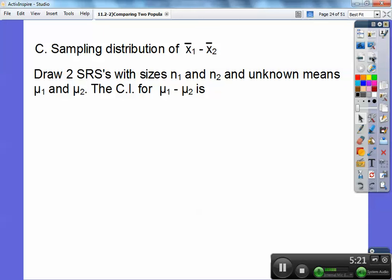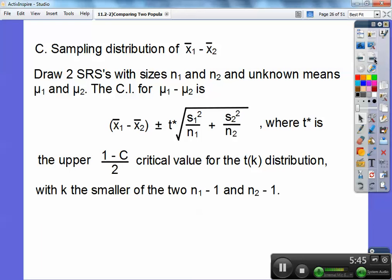So let's go ahead and get some formulas here. Sampling distributions of my means, my differences of my means. You draw two SRSs with size n₁ and n₂, unknown population means. So my sampling distribution is this right here. So this is my confidence interval. It's going to be the means minus this whole groovy looking formula right there. Don't worry. They'll give that to you on your test right there.